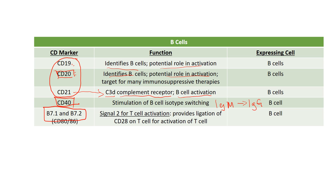B7-1 and B7-2 are also known as CD80 and CD86 — immunologists like to name things twice to keep things confusing. B7-1 and B7-2 are two molecules that can bind to either CD28 for T cell activation, providing signal 2, or when it's time to end the immune response, they'll bind with higher affinity to CTLA-4 on the T cell to stop the immune response. So when they bind to CD28 we're activating the T cell; when they bind to CTLA-4 we're stopping the T cell.